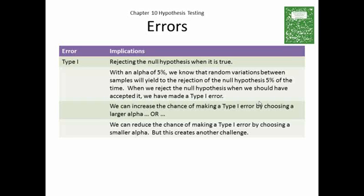There's Type 1 and there's Type 2. Let's look at a Type 1. Type 1 is defined as rejecting the null hypothesis when it's true. With an alpha of 5%, we know that random variations between samples will yield to the rejection of the null hypothesis 5% of the time. When we reject this null hypothesis, but we should have actually accepted it, we have made a Type 1 error. Makes sense?